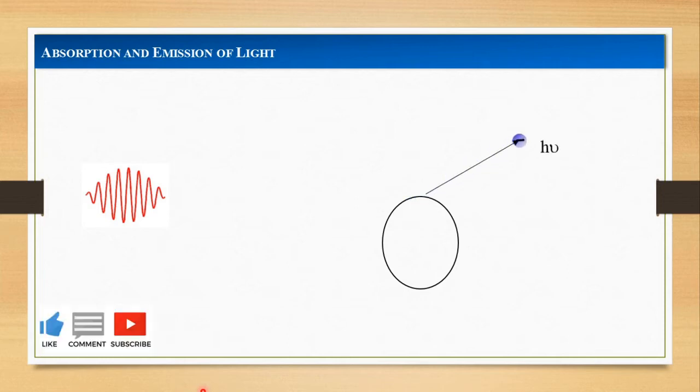In the emission event, light of frequency nu is emitted by an atom. Here, an energy H nu is transferred from the atom to the light. So we can say that absorption and emission of photons is done by the atom.